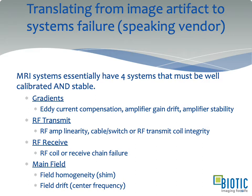When you've identified a problem, you need to translate from image artifact to system or vendor terminology. Vendors think about subsystems — they don't think in terms of phase encode ghosts or signal-to-noise ratio. They think: is there a problem with the gradient systems, with eddy current compensation, amplifier gain drift, gradient amp stability? Or problems with the RF transmit system, RF receive system, RF coils, or the receive chain? Or is the main static field homogeneous — is the shim degrading, is the center frequency drifting? Offering suggestions to the vendor as to where the issue may be helps efficiently zero in on the problem.